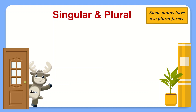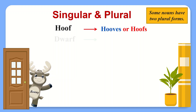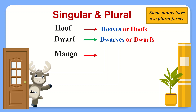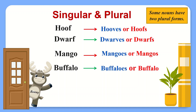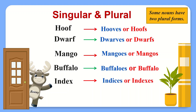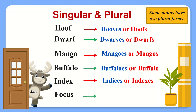Rule number five. Some nouns have two plural forms. For example: hoof becomes hooves or hoofs, dwarf becomes dwarves or dwarfs, mango becomes mangoes or mangos, buffalo becomes buffaloes or buffalo, index becomes indices or indexes, focus becomes focae or focuses.